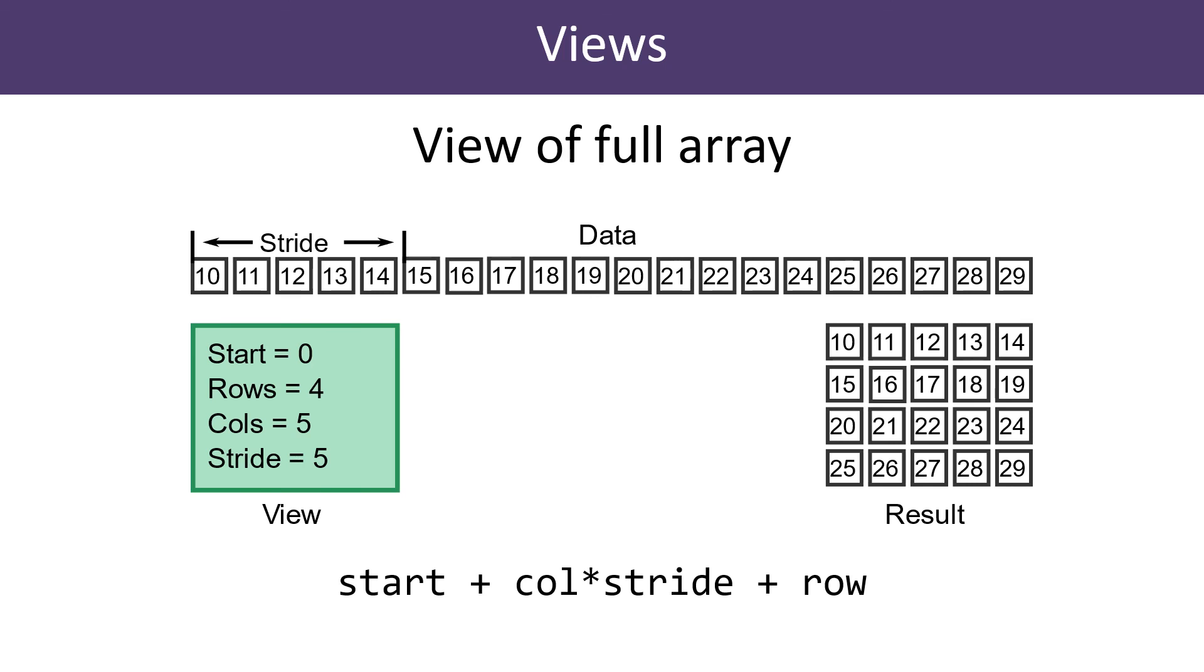Another important value is the stride. The stride is the distance from the start of one row to the start of the next. In this case, the stride is equal to the number of columns, but that won't always be the case. We can calculate the position of the element from the formula shown.